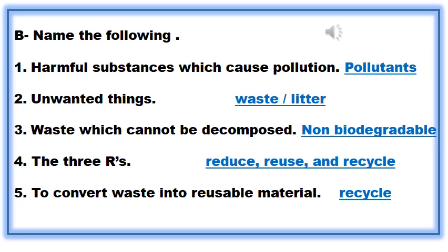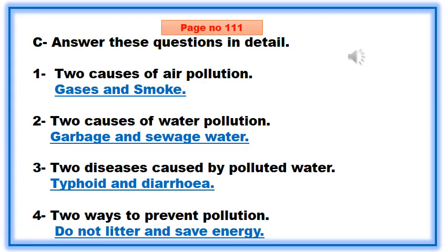Now move on to exercise C on page number 111, answer these questions in detail. Question number one: two causes of air pollution — answer: gases and smoke. Question number two: two causes of water pollution — answer: garbage and sewage water. Number three: two diseases caused by polluted water — answer: typhoid and diarrhea.